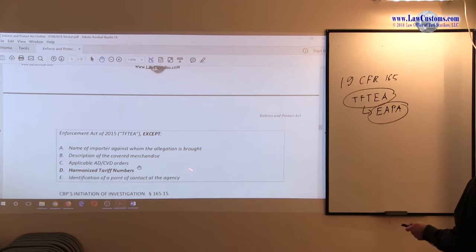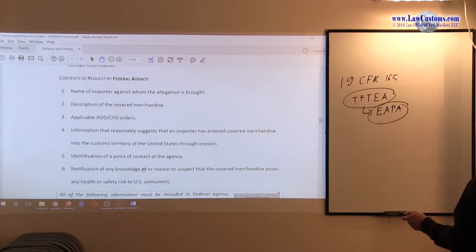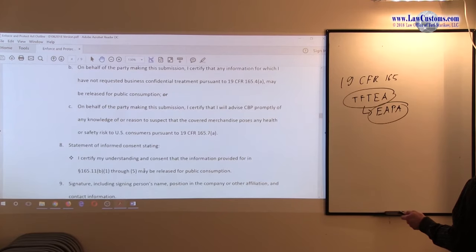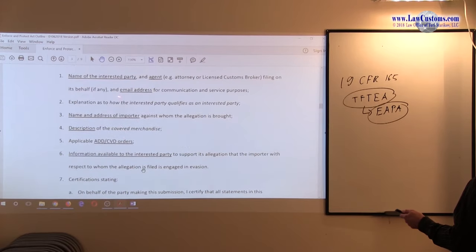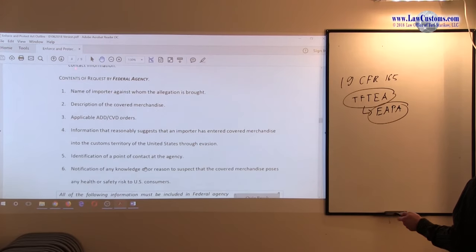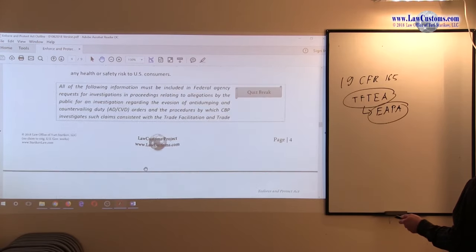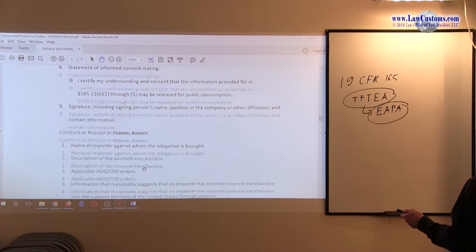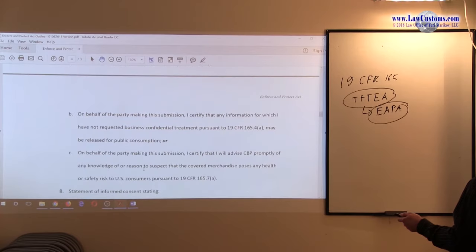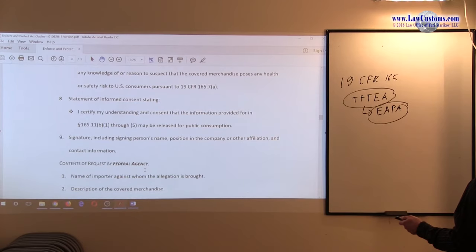Identification of the point of contact at the agency. Now here is the interesting part. Customs examiners here are saying allegations by the public. Here you have allegations by federal agency, which is apparently public agency, and here we have allegations by the interested party, which is not a federal agency. Only federal agency has the identification of the point of contact right here. And here you do have to identify yourself, right? You have to provide the contact information, you have to provide the identification of who you are, on whose behalf you are doing this.